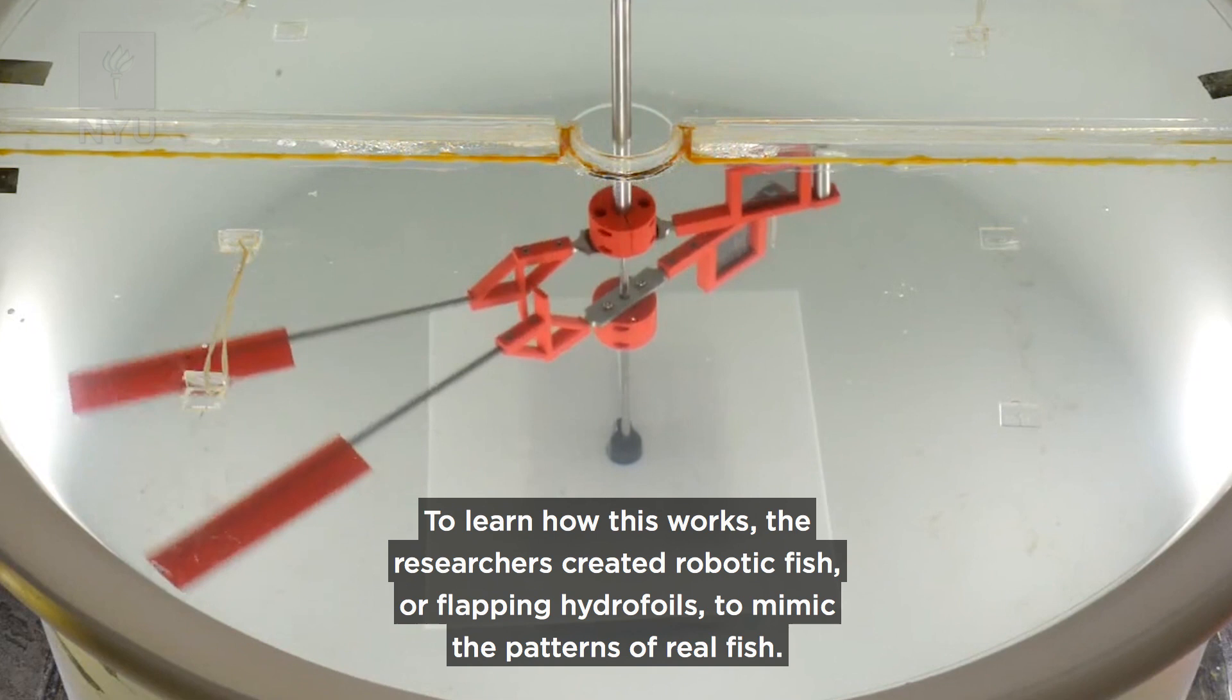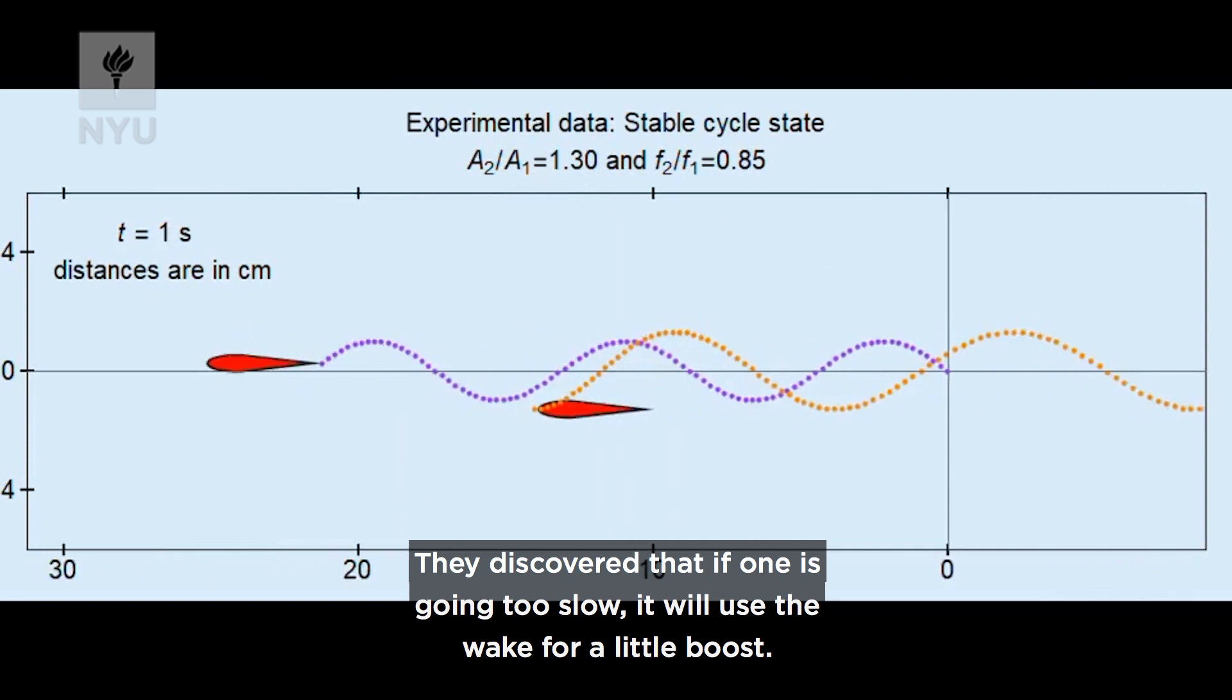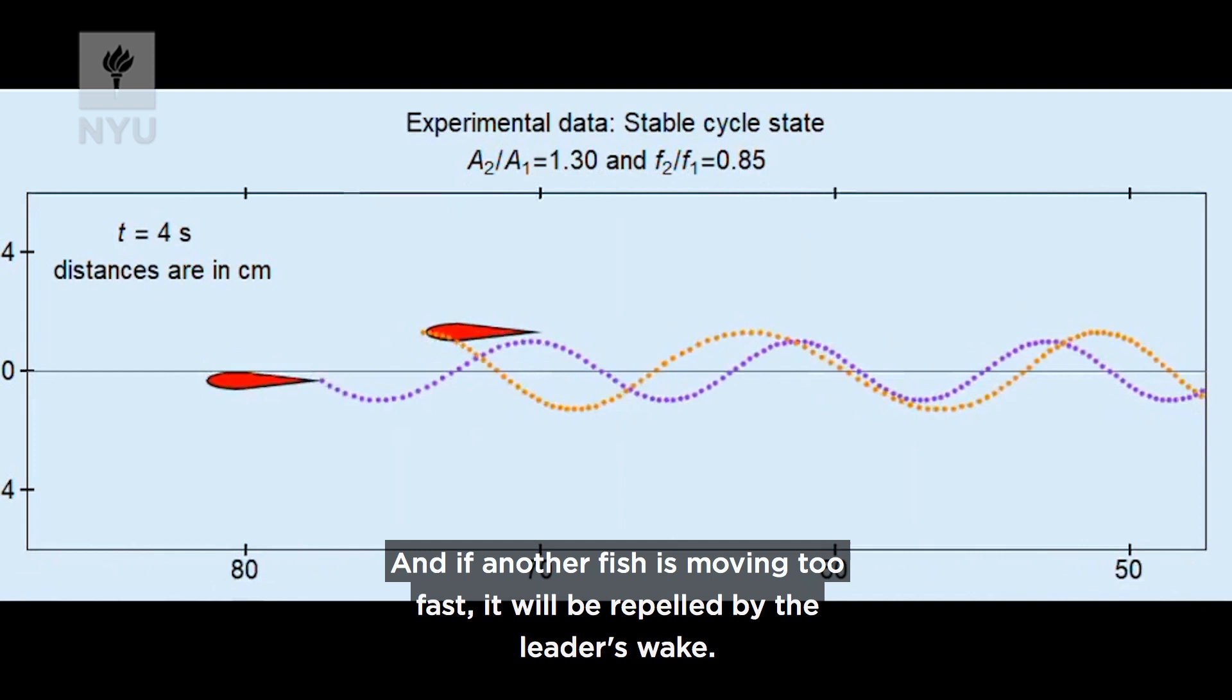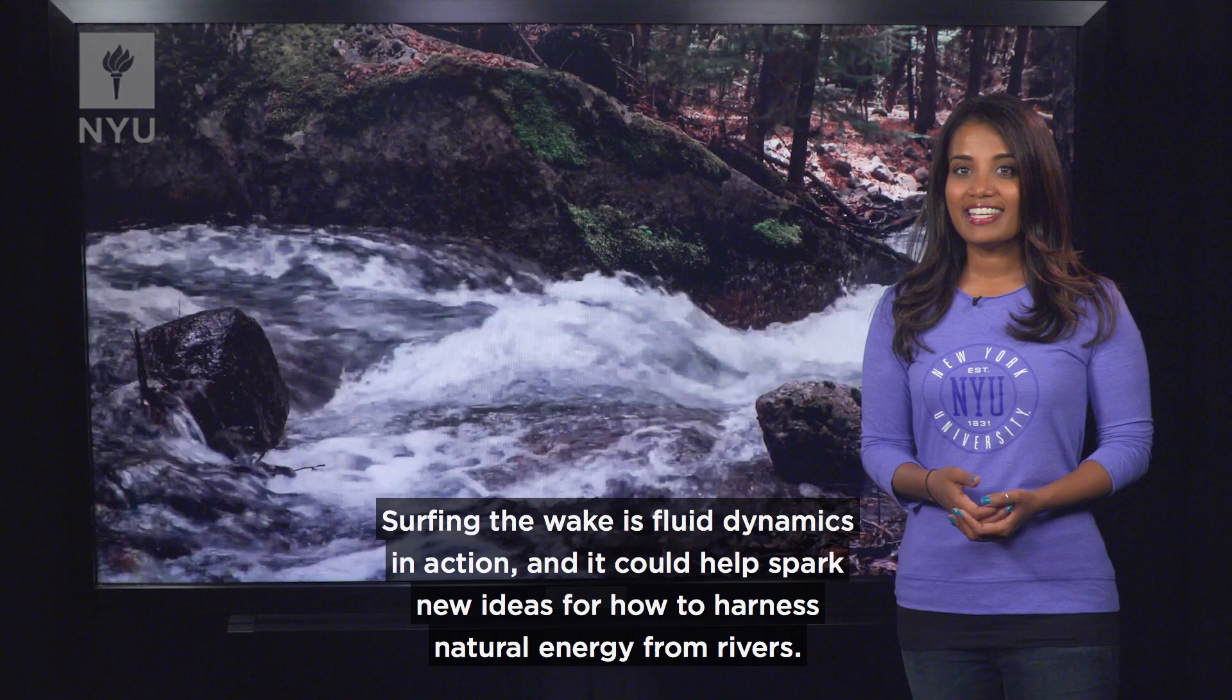To learn how this works, the researchers created robotic fish, or flapping hydrofoils, to mimic the patterns of real fish. They discovered that if one is going too slow it'll use the wake for a little boost, and if another fish is moving too fast it'll be repelled by the leader's wake.